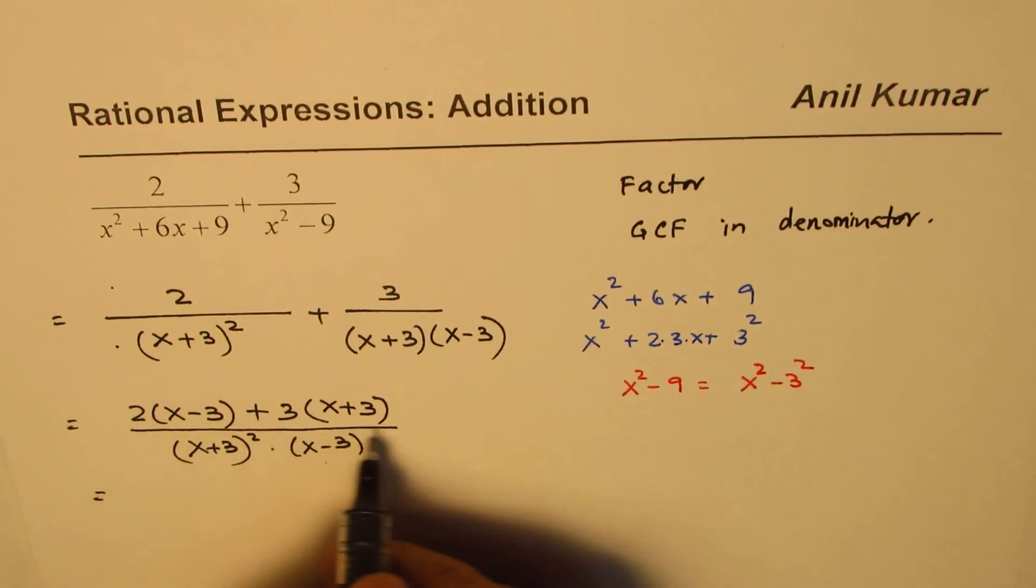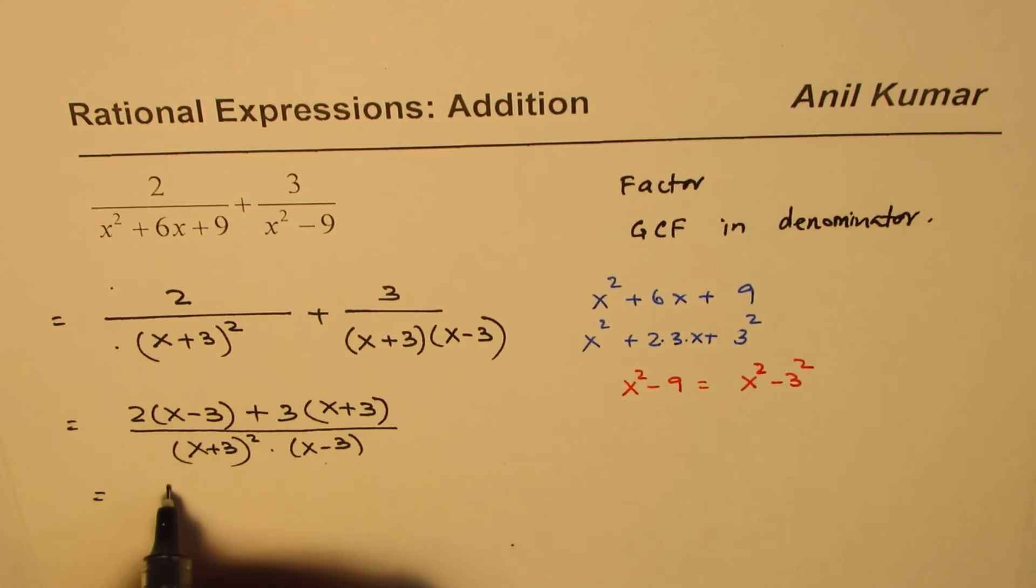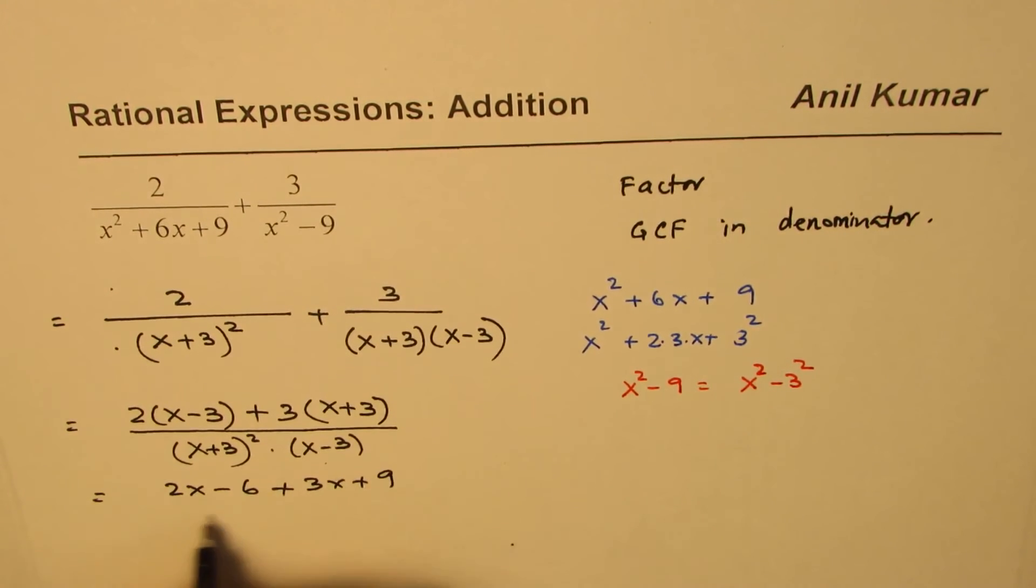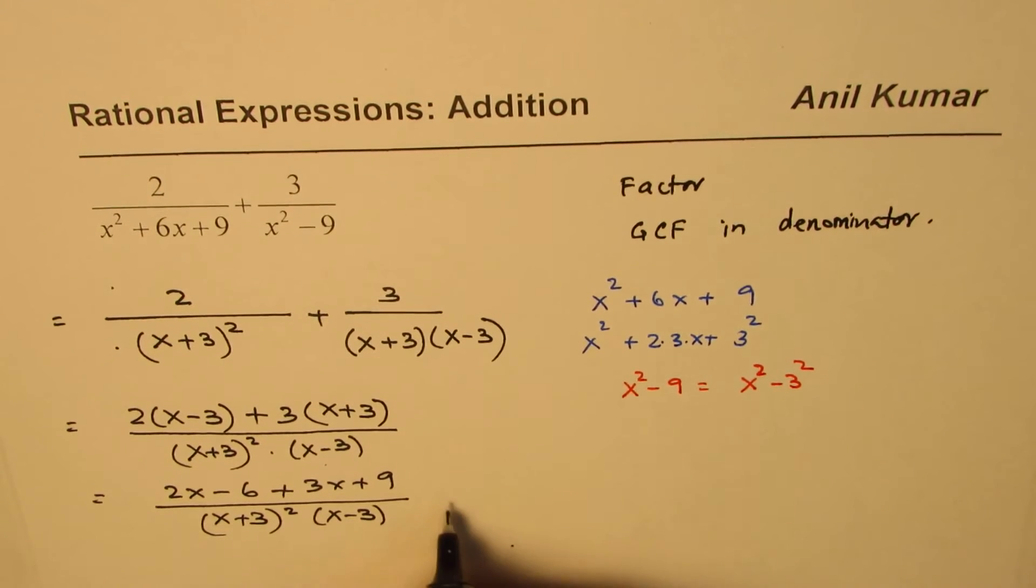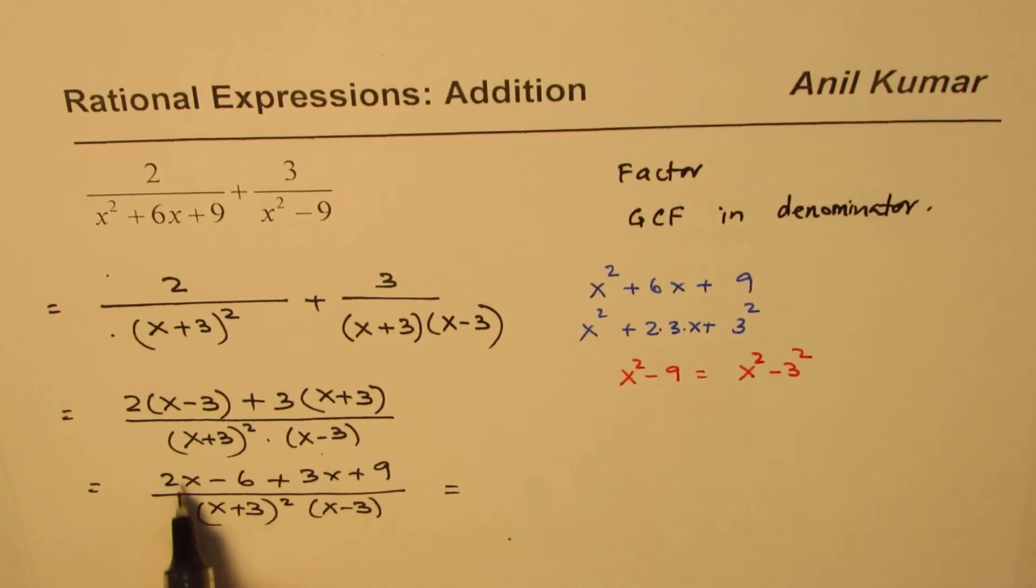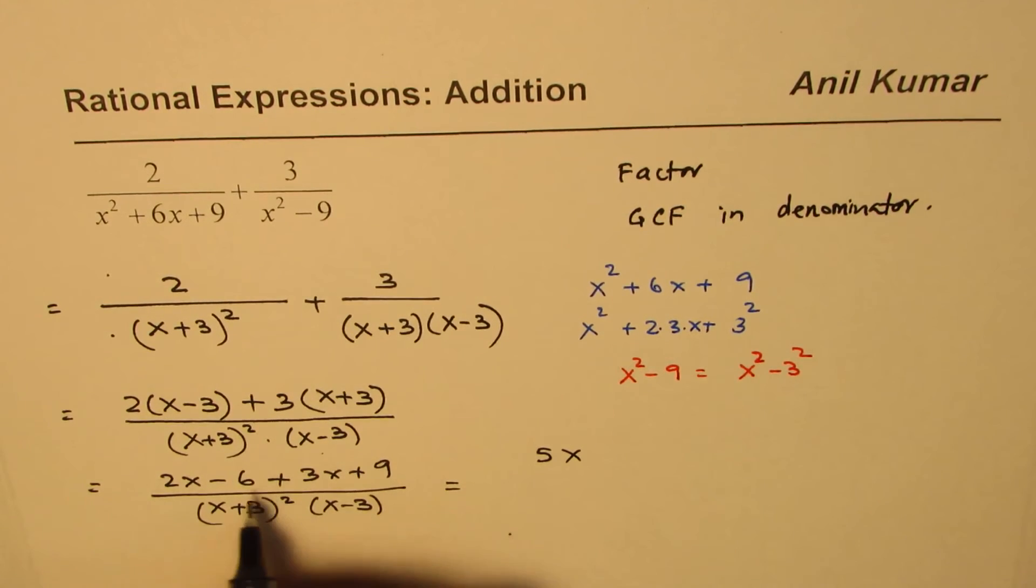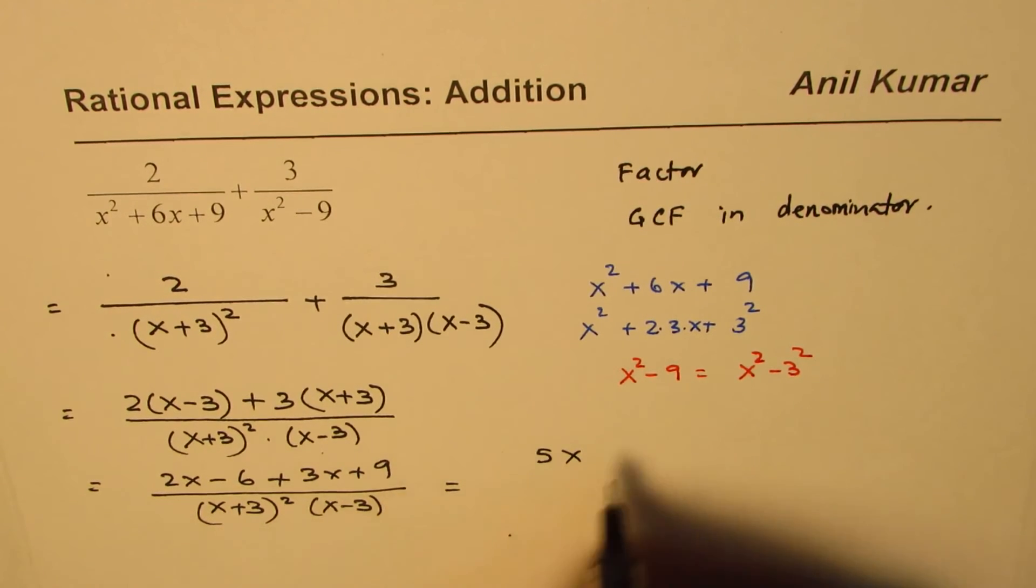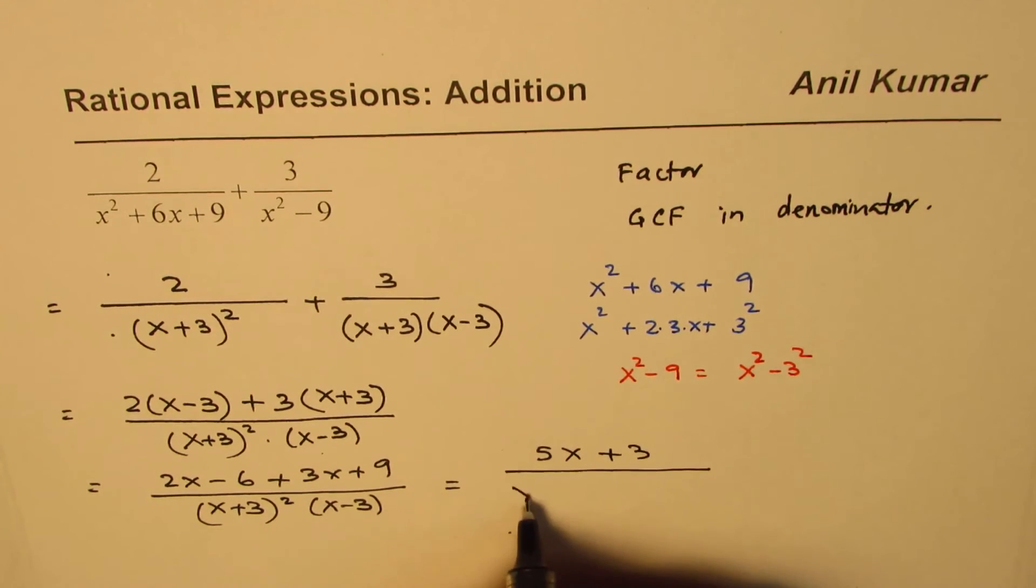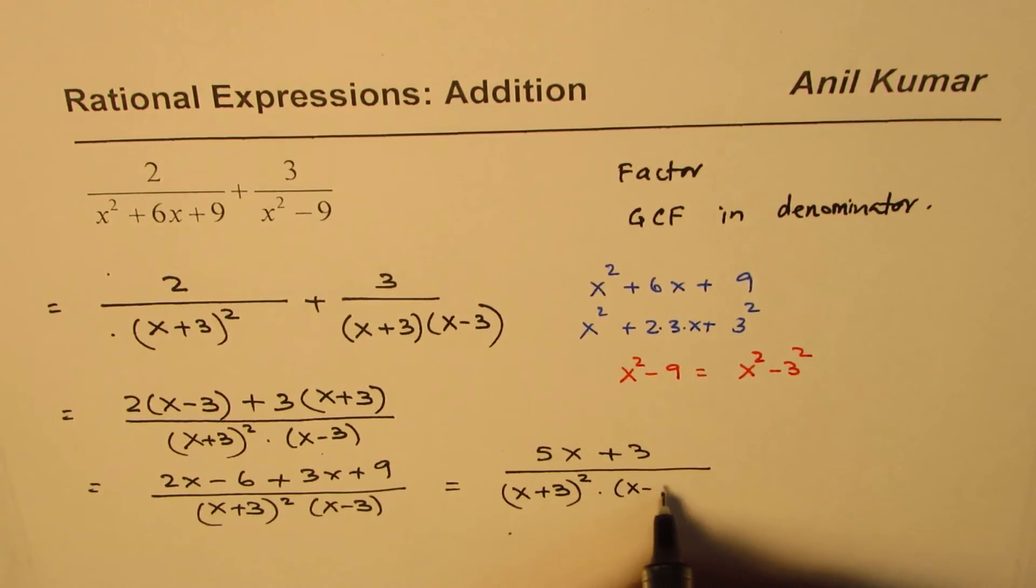Now, we can actually expand and simplify the numerator. We have 2x minus 6 plus 3x plus 9 divided by x plus 3 whole square times x minus 3. Let us simplify the numerator by combining the like terms. 2x plus 3x is 5x and minus 6 plus 9 is plus 3 divided by x plus 3 whole square times x minus 3.